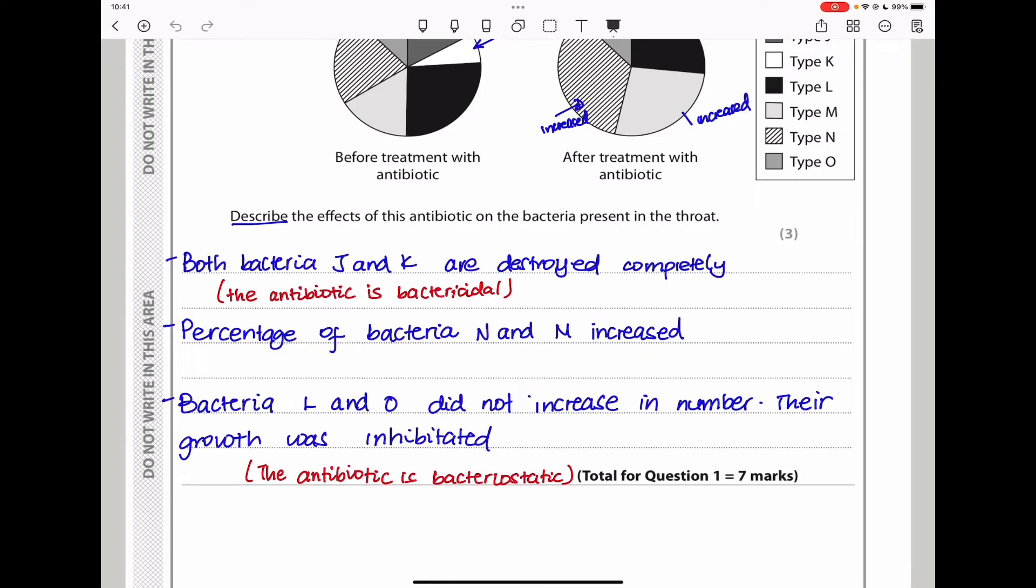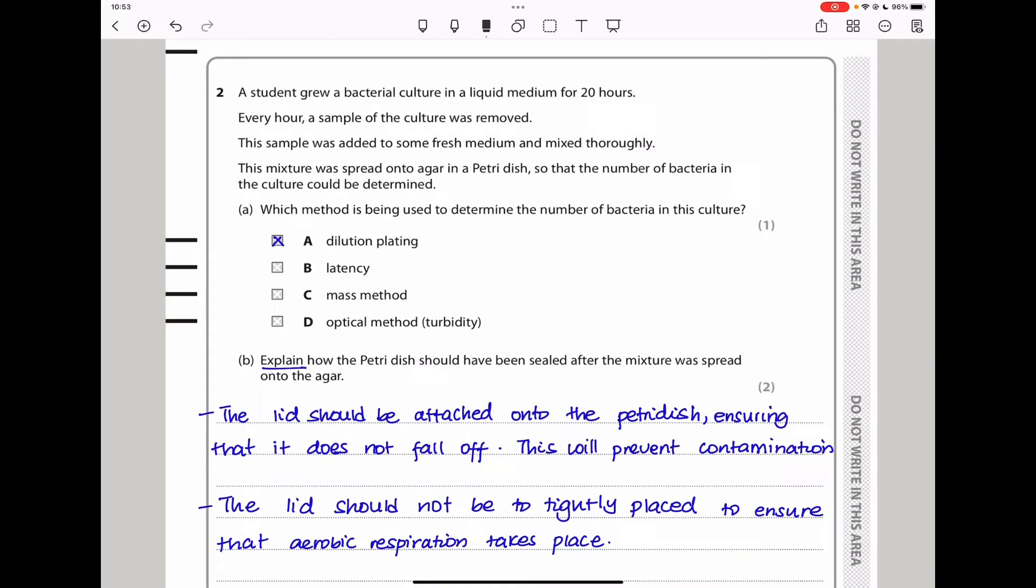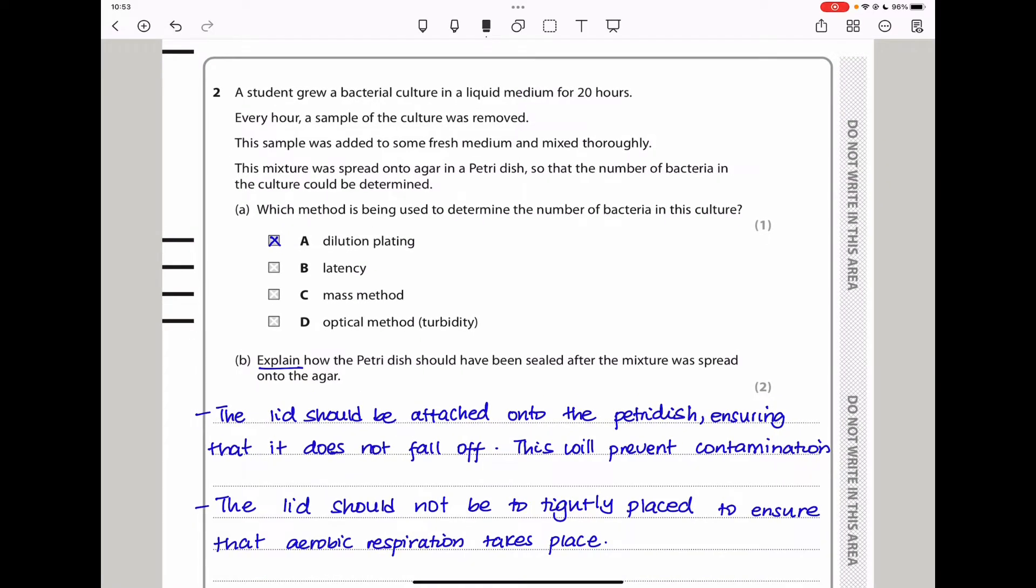Let's continue on to question two. A student grew a bacterial culture in a liquid medium for 20 hours. Every hour, a sample of the culture was removed. This sample was added to some fresh medium and mixed thoroughly. This mixture was sprayed onto agar in a petri dish so that the number of bacteria in the culture could be determined. Which method is being used to determine the number of bacteria in this culture? In this culture, because they are taking off some medium and adding some fresh medium, and then mixing thoroughly, this is a dilution method. So they dilute and then they plate. So it's dilution plating. The answer should therefore be A.